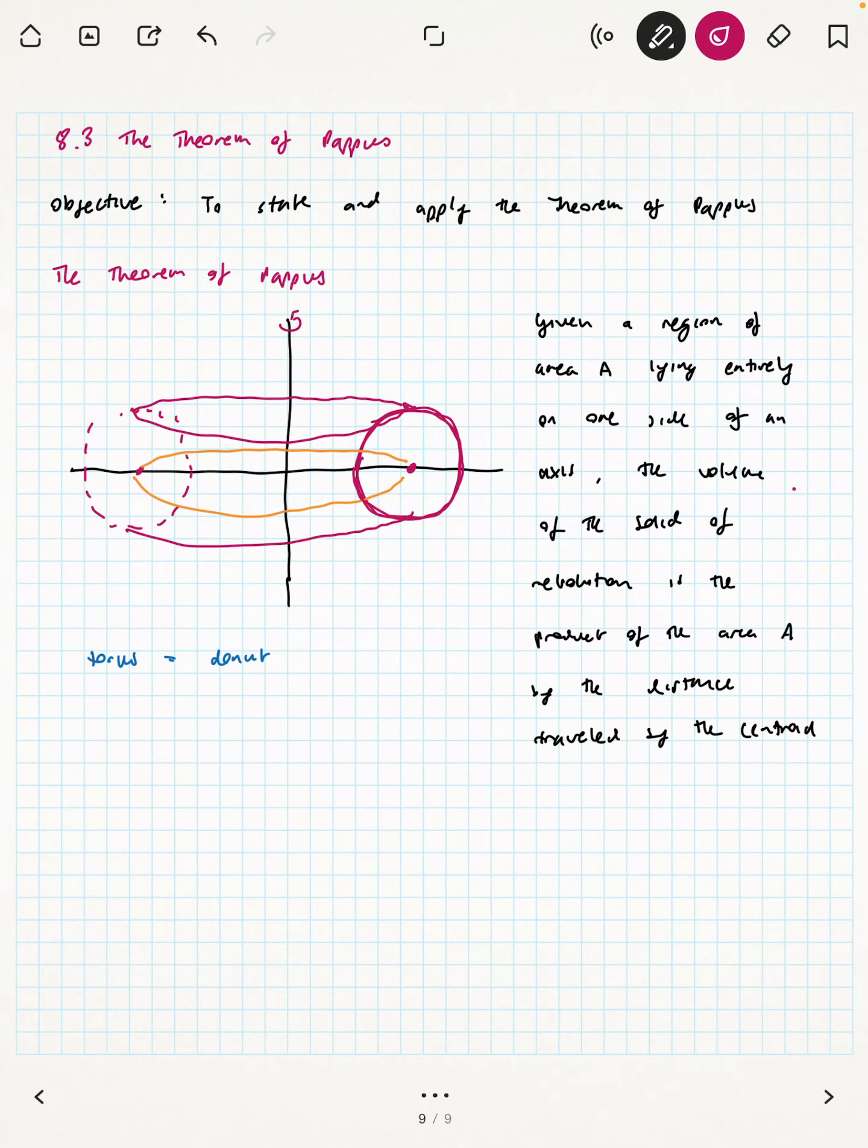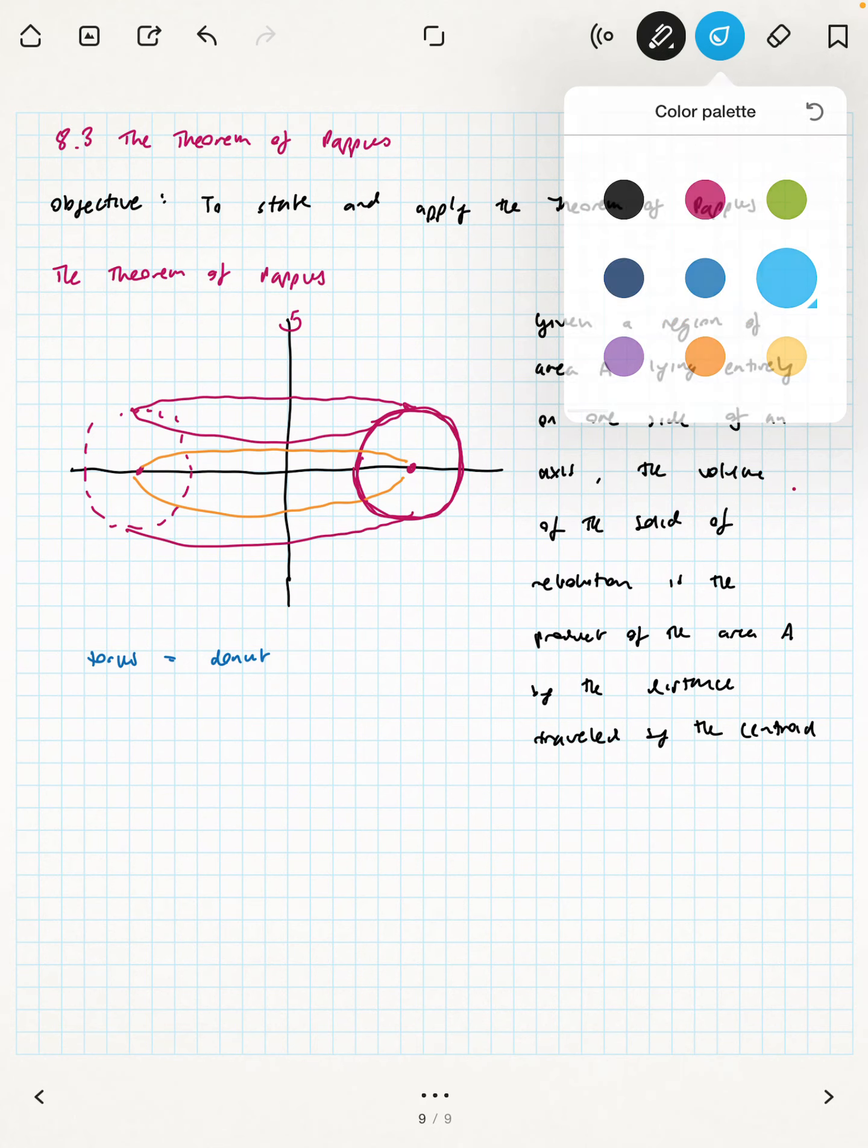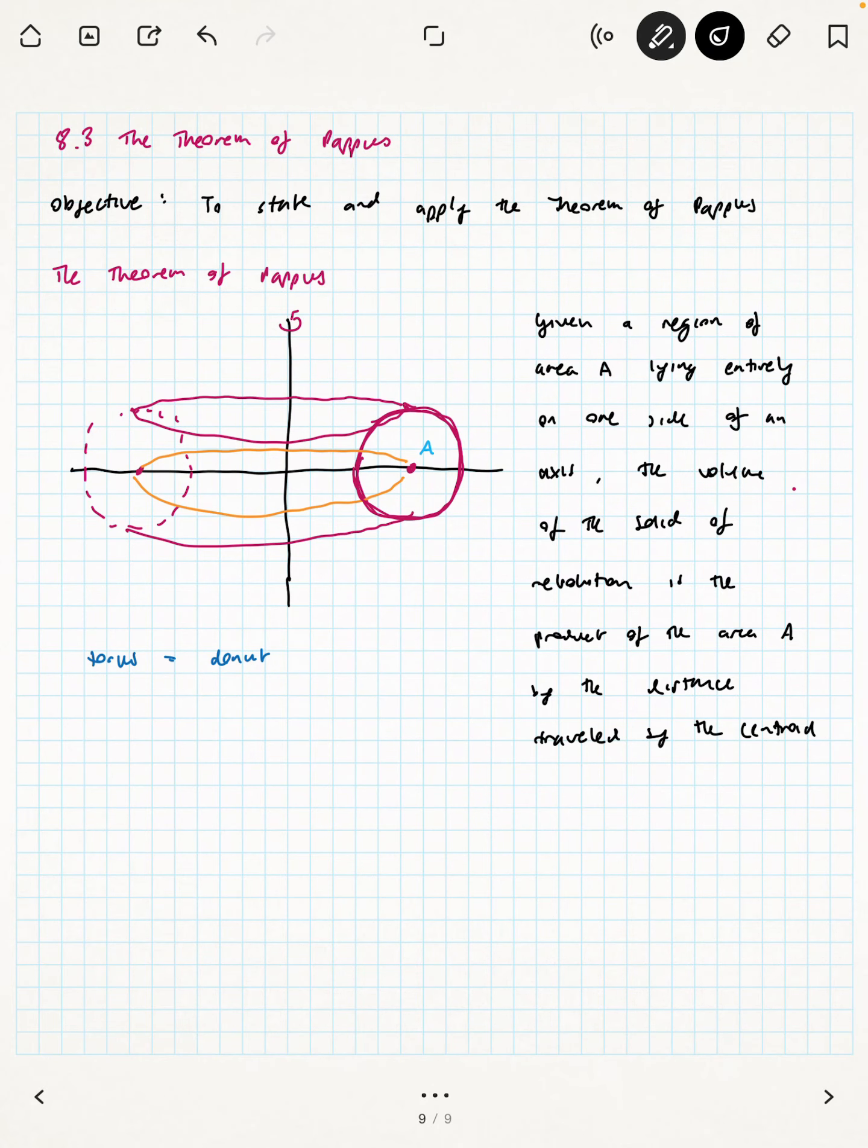So if we think about a torus, for instance, as being generated by this plane or lamina, which is a circle, think about that area, that cross-sectional area, and the distance traveled by the centroid. What this theorem says is that the volume is equal to that area times the distance traveled by the centroid, which I'm going to put as d bar.